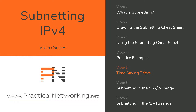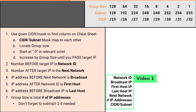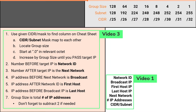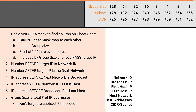Welcome to the IPv4 Subnet Mastery video series, video 5. In this video, we will show you some tricks to help you solve subnetting problems quicker. This video is all about showing you how to solve for the 7 attributes faster. Before watching this video, you must have already watched at least video 1 to describe what each of the 7 attributes are, and video 3 to understand the 7 steps to solve for each attribute. I also highly recommend watching video 2 to understand how to draw the cheat sheet, and video 4 to get more practice using the cheat sheet. With that said, let's show you 4 tips to increase your subnetting speed.